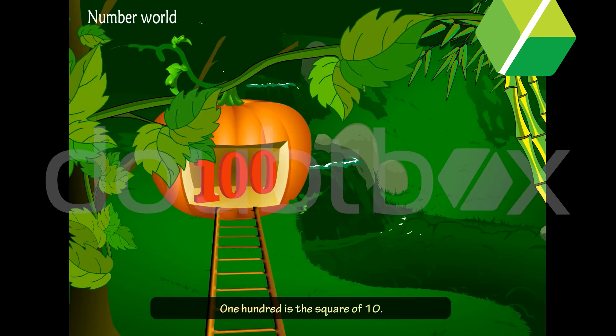Number world. 100 is the square of 10. 125 is the cube of 5. 144 is a dozen dozens or one gross.